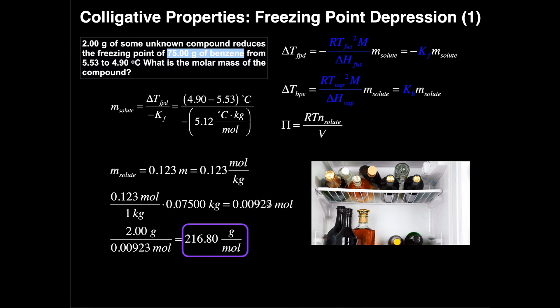Now that we know the number of moles and the mass of the unknown compound, we can calculate its molar mass: molar mass = grams ÷ moles = 2.00 g ÷ 0.00923 mol = 216.80 g/mol. That is the molar mass of the solute, the unknown compound.